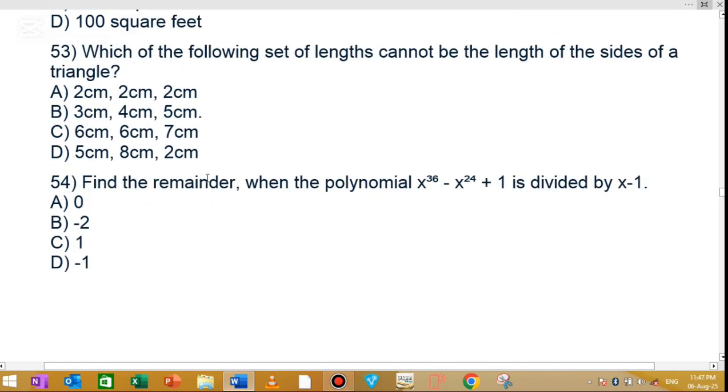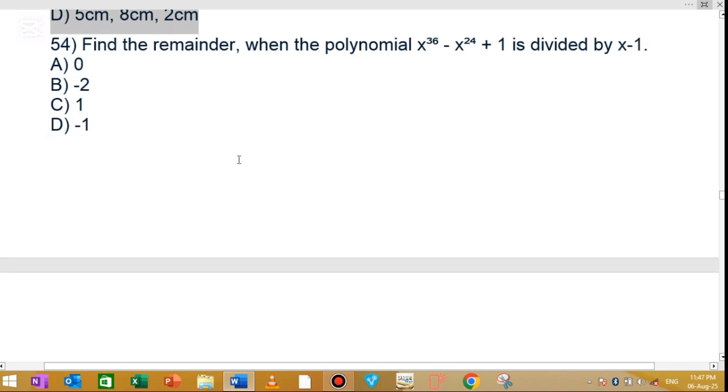Question number 53: Which of the following set of lengths cannot be the lengths of the sides of a triangle? Question number 54: Find the remainder when polynomial x to power 36 minus x to power 24 plus 1 is divided by x minus 1. Option C is 1.